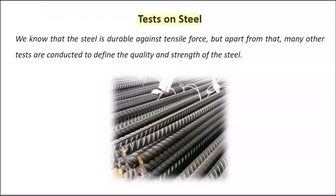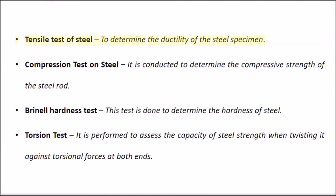Tests on Steel. Steel is known for its durability against tensile force, but many other tests are conducted to define its quality and strength. Tensile Test: Determines the ductility of the steel specimen. Compression Test on Steel: Determines the compressive strength of the steel rod. Brinell Hardness Test: Determines the hardness of steel. Torsion Test: Assesses the capacity of steel strength when twisted against torsional forces at both ends.